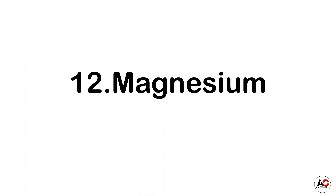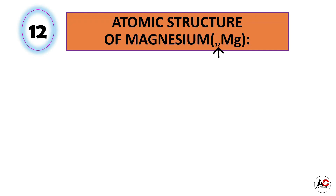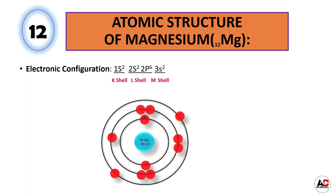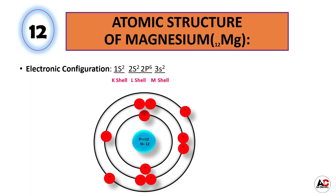Now magnesium. The atomic number of magnesium is 12, meaning it has a total of 12 electrons. The electronic configuration of magnesium is 1s2, 2s2, 2p6, and 3s2. With the help of this electronic configuration, the atomic structure of magnesium is like this. It has 12 protons and 12 neutrons inside the nucleus and 12 electrons around the nucleus: 2 are in the K shell, 8 are in the L shell, and 2 are in the M shell.